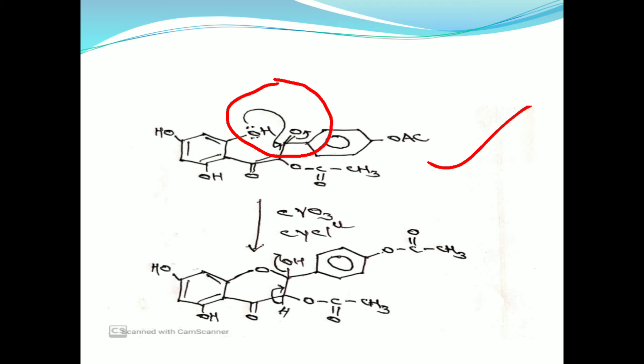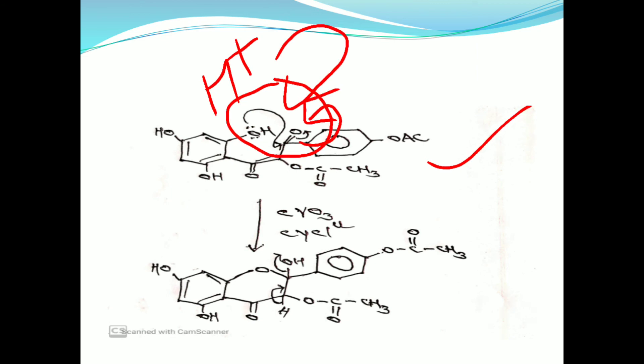In this cyclization reaction, a new bond is formed between the oxygen atom of a hydroxy group and the carbon atom of the ketonic group. At the same time, the pi bond is shifted to the oxygen atom, so oxygen gets a negative charge. The hydrogen is then removed as H⁺ from the hydroxy group, and the H⁺ is added back to the O⁻ ion, converting it into OH.